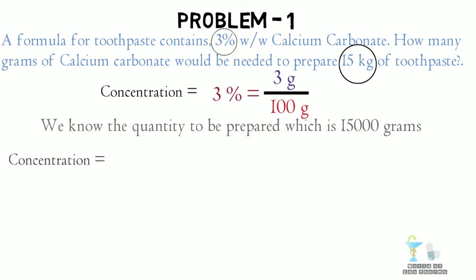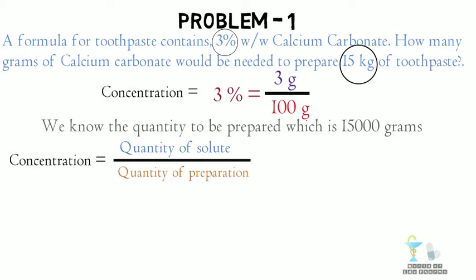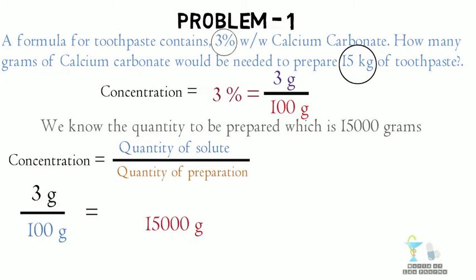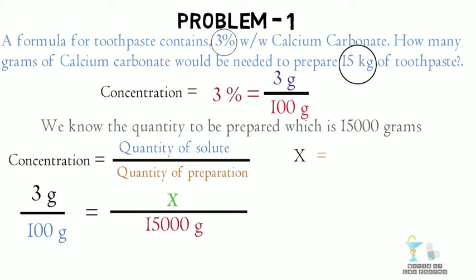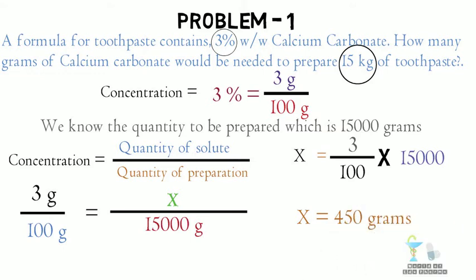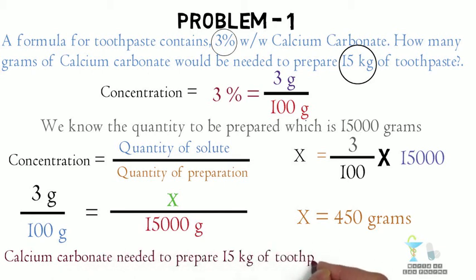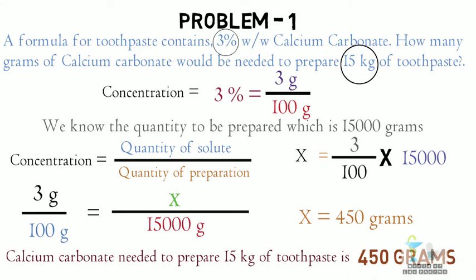Applying the concentration formula — quantity of solute divided by quantity of preparation — the concentration is 3%. We know the quantity to be prepared is 15,000 grams, and we want to find how many grams of calcium carbonate are needed. Assuming this as x: x = (3/100) × 15,000. The final answer is 450 grams of calcium carbonate needed to prepare 15 kilograms of toothpaste.